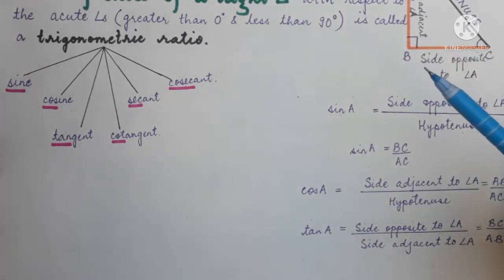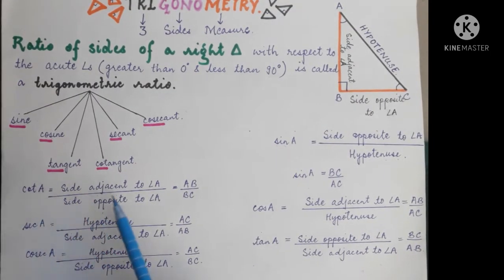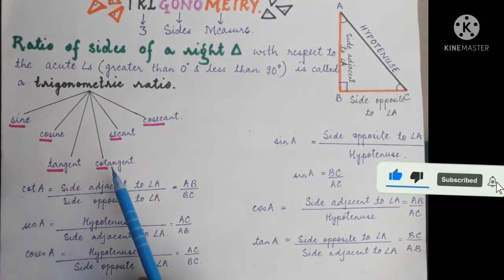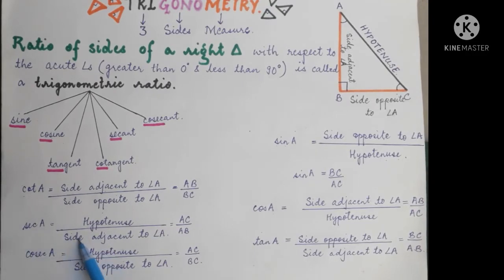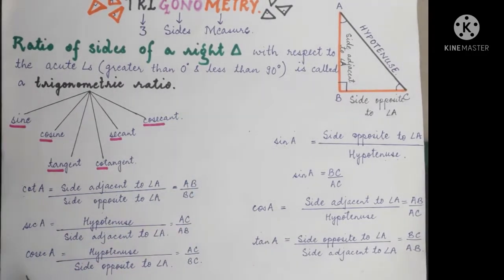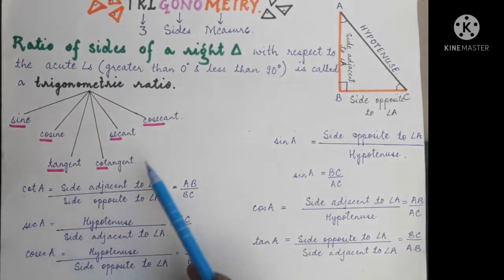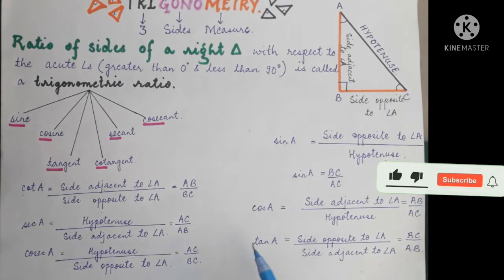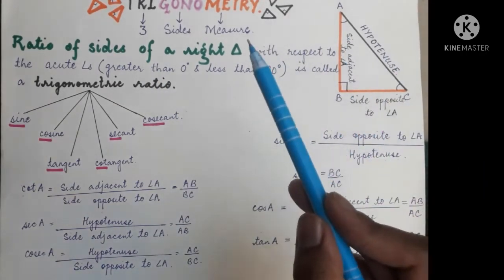Similarly, let us write the remaining three trigonometric ratios. Cot A is side adjacent to angle A upon side opposite to angle A. Cot A is the short form of cotangent of angle A. Secant of angle A is equal to hypotenuse upon side adjacent to angle A. And cosecant of angle A is equal to hypotenuse upon side opposite to angle A. The short forms we use are cot A, sec A, and cosec A.